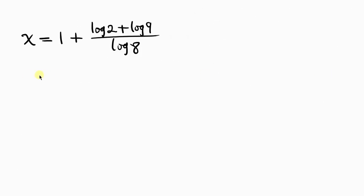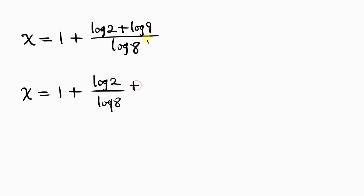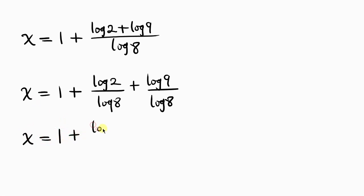Our next step will be to separate this fraction. So we have x equal to 1 plus log 2 over log 8, plus log 9 over log 8. Now, log 8 is the same as log 2 to the 3, and log 9 is the same as log 3 squared.